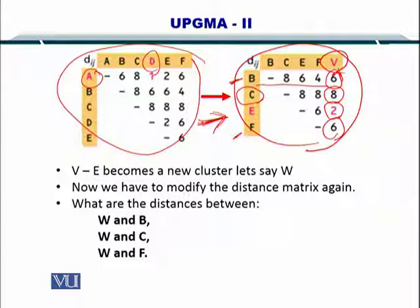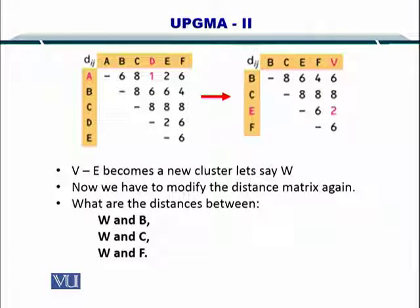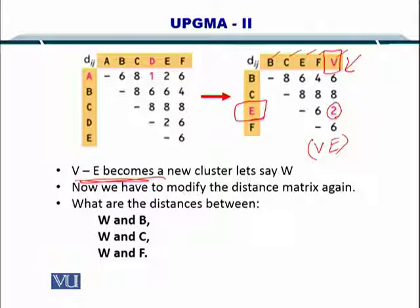Now the next step is to create the next cluster. The approach is the same. You simply look at this new matrix and find out the shortest distance between the sequences or cluster. Remember B, C, E, and F are still sequences while V is a cluster. You can see that 2 is the smallest value in this distance matrix. So we need to create a cluster between V and E. V and E become a cluster, let's call it W.